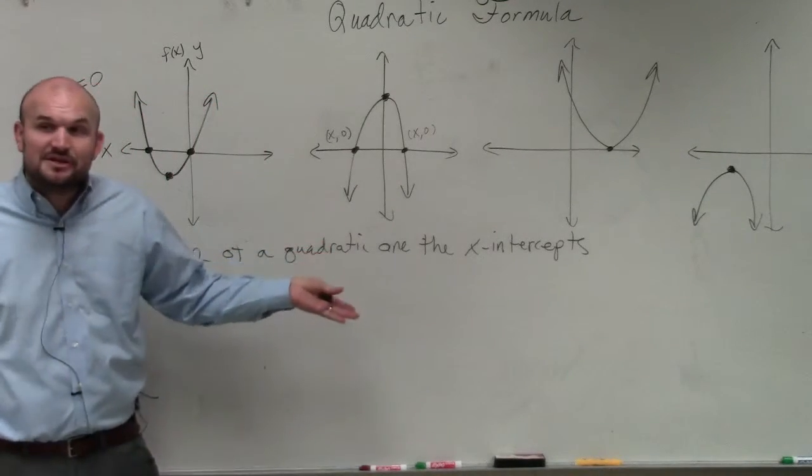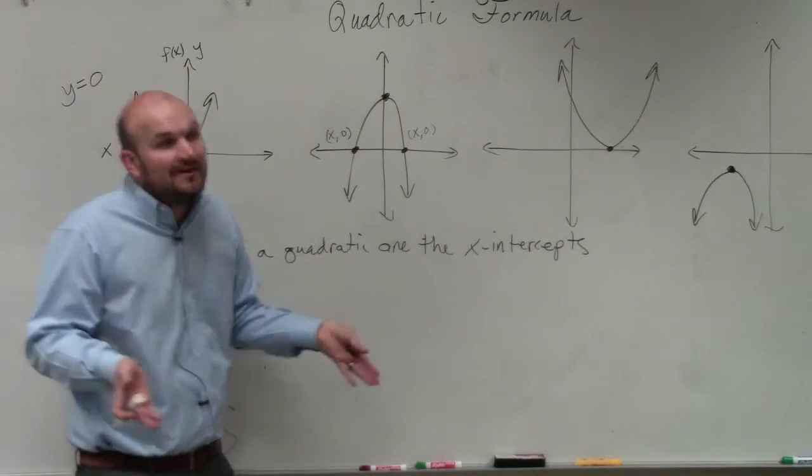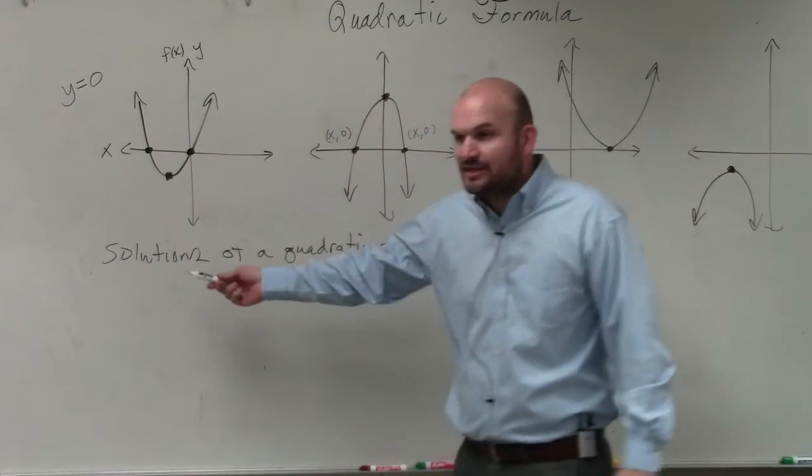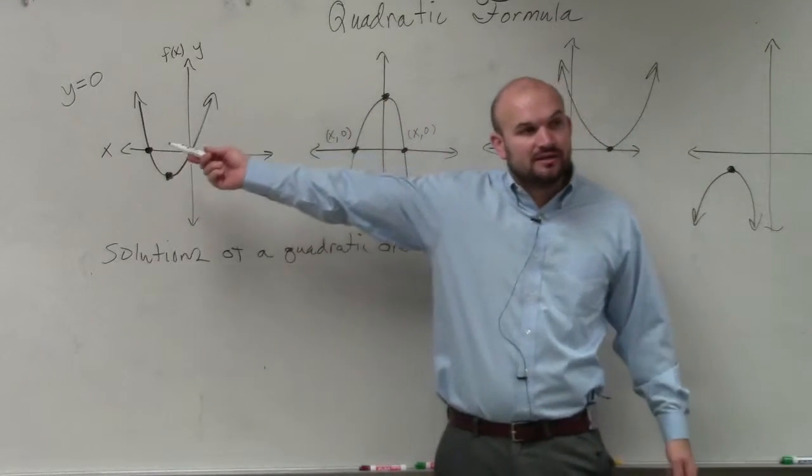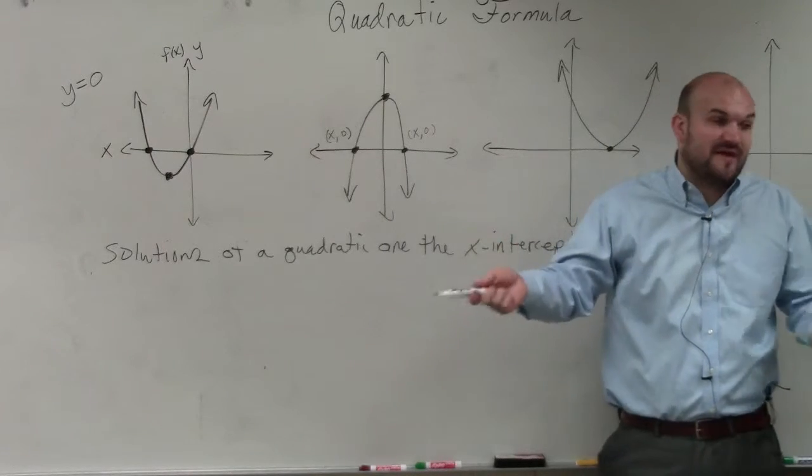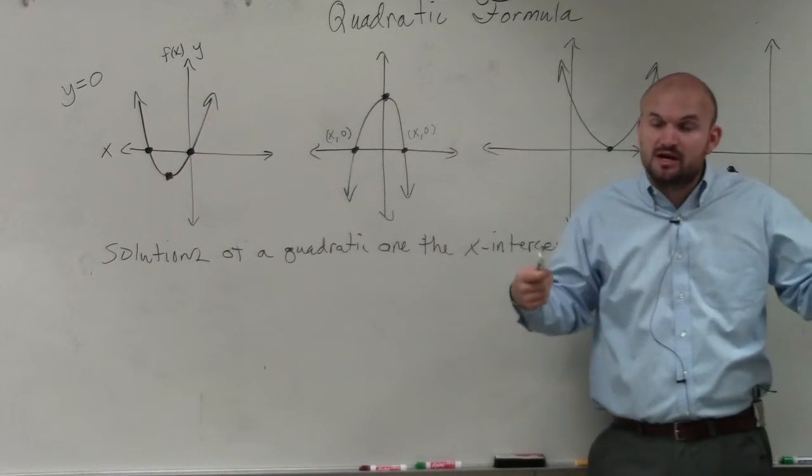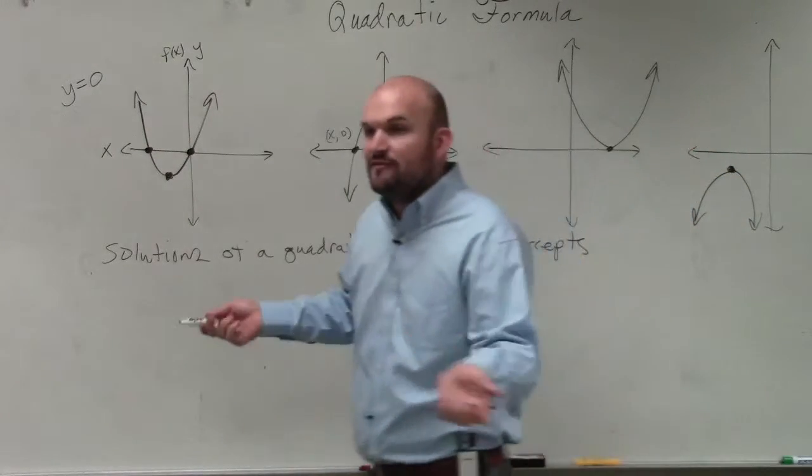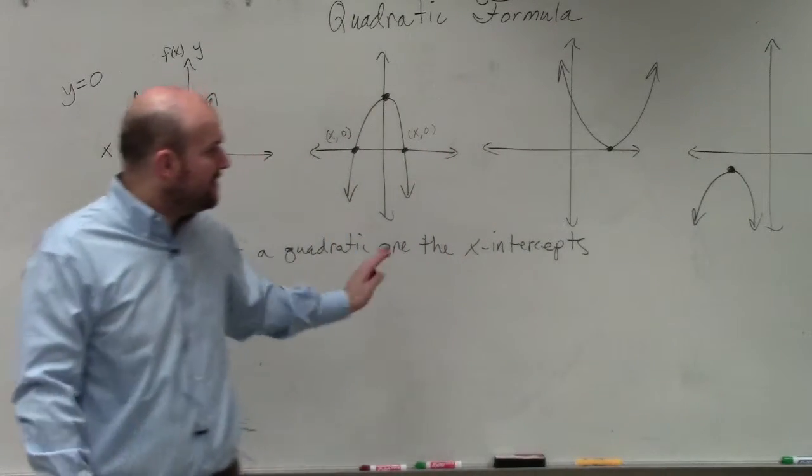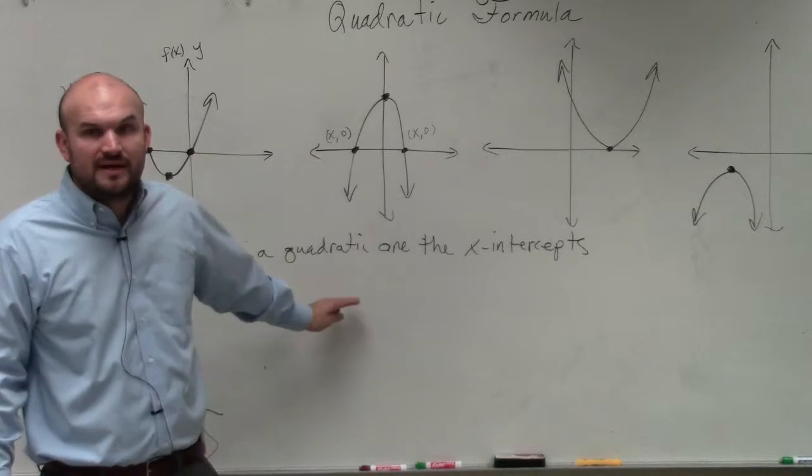But if I say just find the x-intercepts, of course you could graph it and see where the graph crosses. But you could also algebraically set your equation equal to 0 and solve, right? Solve by factoring or completing the square, which we've just talked about so far. Solve it. And whatever those values are, those are the x-intercepts. That's a very, very important distinction for that. Does everybody see that?